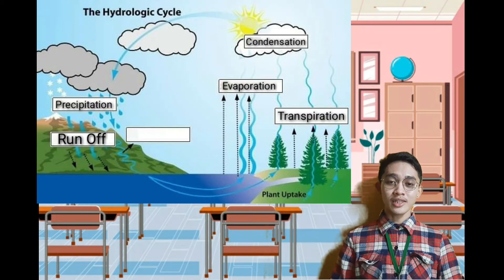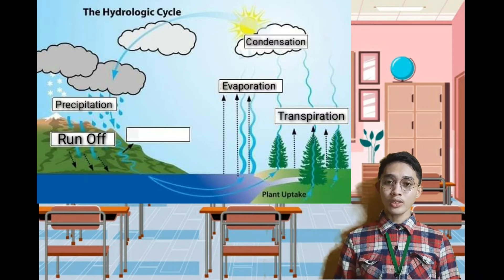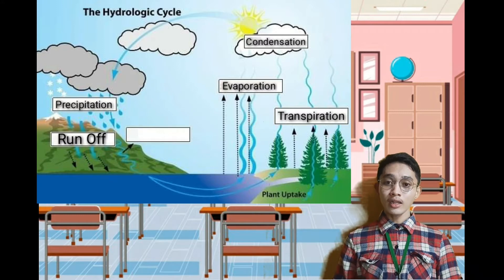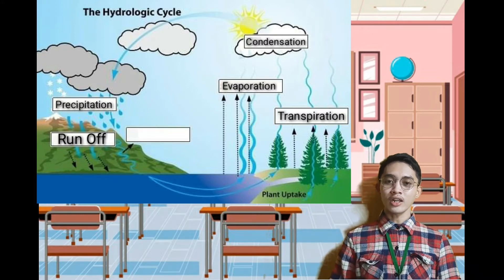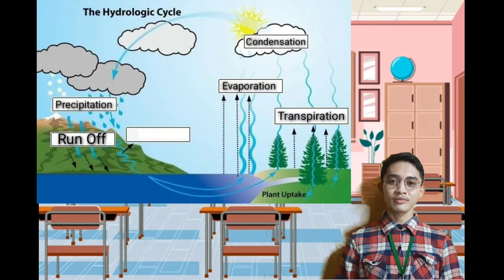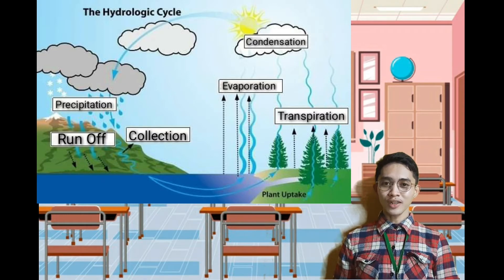Number six: this is when water that falls from the clouds as sleet, rain, or snow collects in the oceans, etc. That's correct — collection. So who got a perfect score? All of you got a perfect score. Good job class.